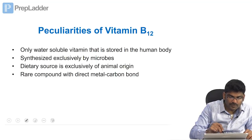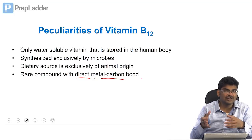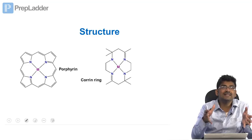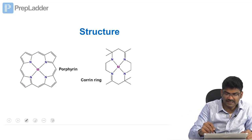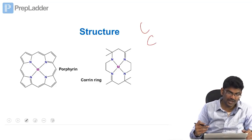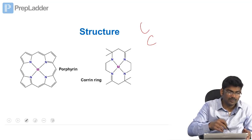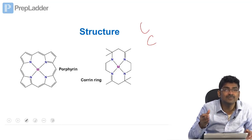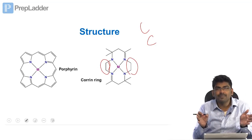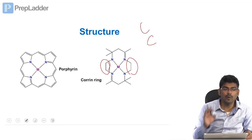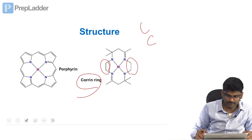Vitamin B12 is a rare compound with a direct metal-carbon bond. Vitamin B12 contains a corrin ring and cobalt. The corrin ring is similar to the porphyrin ring. Porphyrin is a tetrapyrrole linked by methine bridges; in the corrin ring, two pyrrole rings are linked directly instead of by methine bridges. All you have to know is: corrin ring and cobalt in vitamin B12.